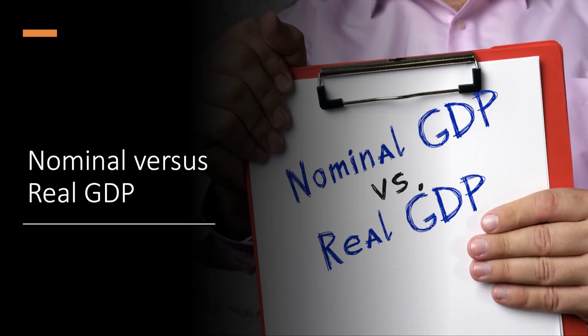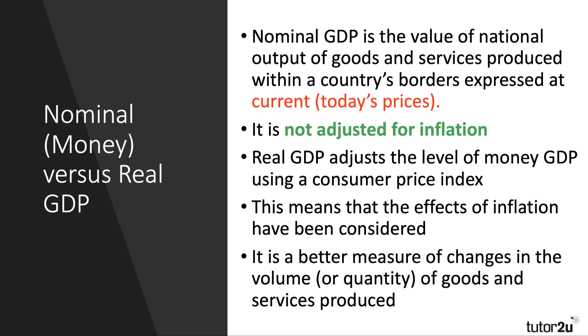The first thing to think about is the difference between nominal versus real GDP. GDP stands for gross domestic product and it measures the total value of the national output of goods and services produced in a given time period — crucially, the value of output produced within the geographical borders of a country.